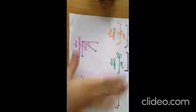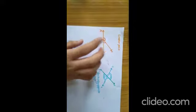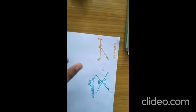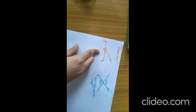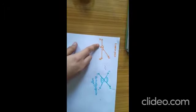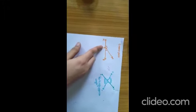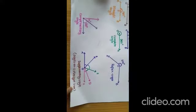But what about linear pair and vertically opposite angles? When only two angles join and form 180 degrees, they are called linear pairs. But when more than two angles form 180 degrees, they are called angles on a straight line.